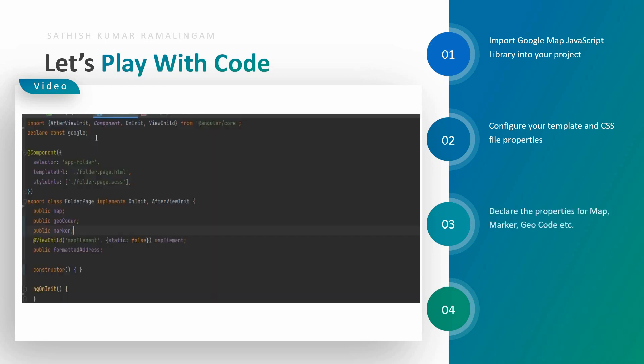Now we are going to declare global and class-level properties. This is very important to implement Google Maps in our Ionic application.